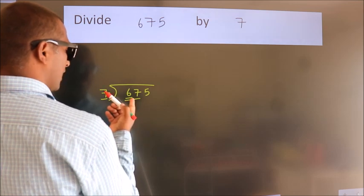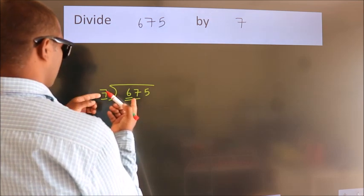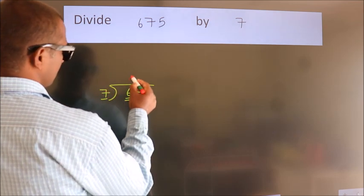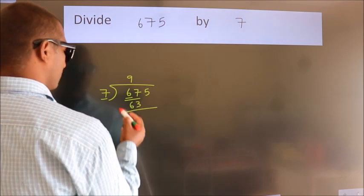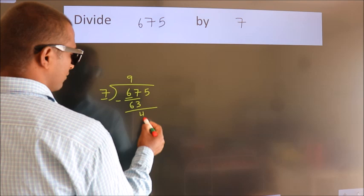A number close to 67 in the 7 table is 7 nines, 63. Now we should subtract. We get 4.